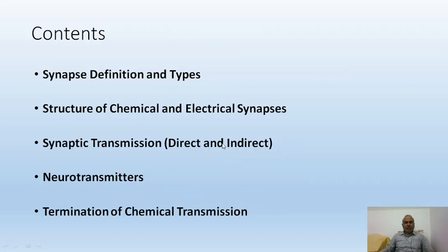The contents of today's discussion are: the definition of synapse and the types of synapse, structure of chemical and electrical synapses, synaptic transmission mechanism, synaptic transmission types — direct and indirect synaptic transmission — neurotransmitter examples, and the termination of chemical transmission, including how neurotransmitters get removed from the synaptic cleft.